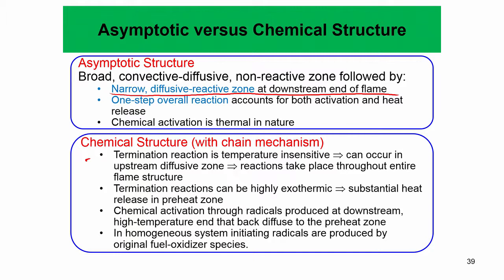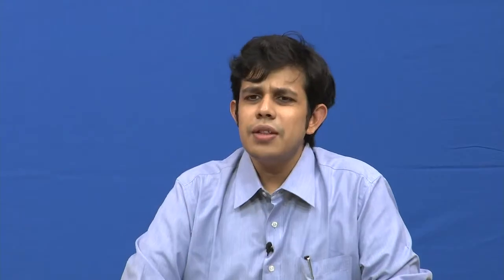When a reaction has very small activation energy, there is no requirement that it will only happen at very high temperature. There are many other reactions like the branching reactions with very high activation energy that occur at large rates only at high temperature, but not all reactions have large activation energy. The termination reaction is a very good example — it is temperature insensitive and can occur in the upstream diffusive zone, so reactions can take place throughout the entire flame structure.